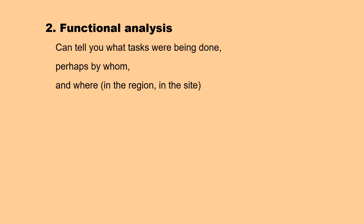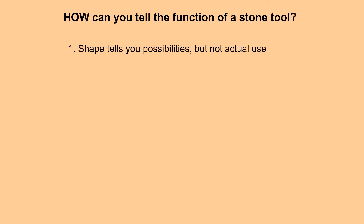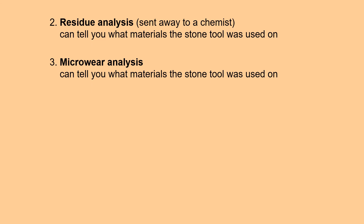Analysts can also do functional analysis, telling us what tasks were being done — perhaps even by whom, and where: in the region or where within the site? The shape tells you possibilities, but not necessarily the actual use of a tool. Residue analysis can tell you what materials the stone tool was used on, though that is sent away for a chemist to perform. The lithic analyst might also do microware analysis, which can tell you what materials the stone tool was used on.